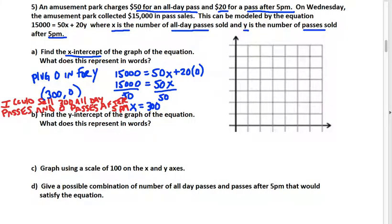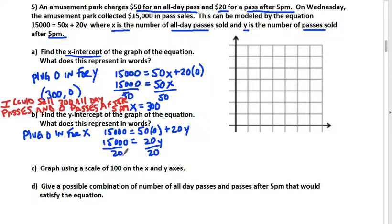Now we're going to find the y-intercept. To find the y-intercept, we plug zero in for X. In our equation, we have 15,000 equals 50 times zero plus 20Y. When you multiply 50 times zero, that goes away, and all you have left is 20Y. To get Y alone, you divide by 20. So 15,000 divided by 20 is 750. Our y-intercept is zero comma 750.